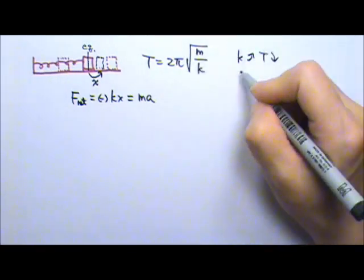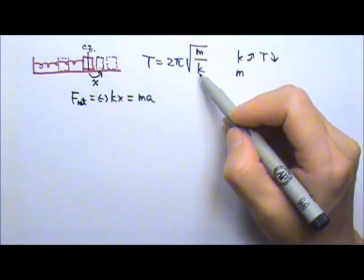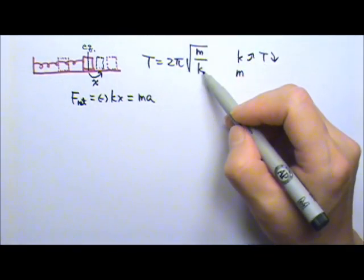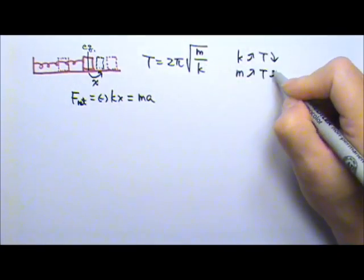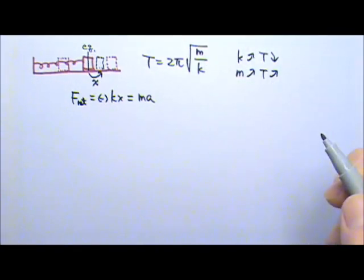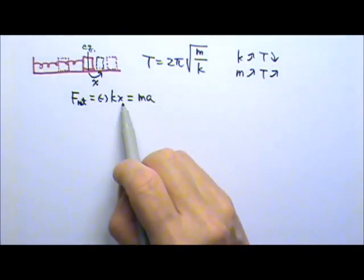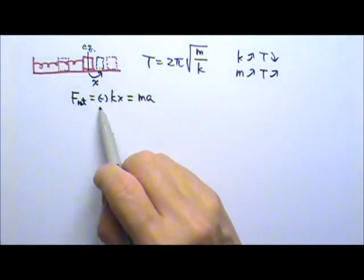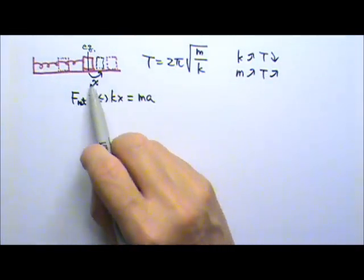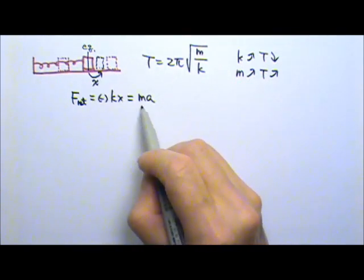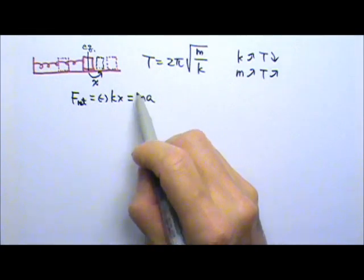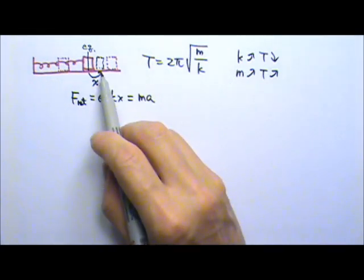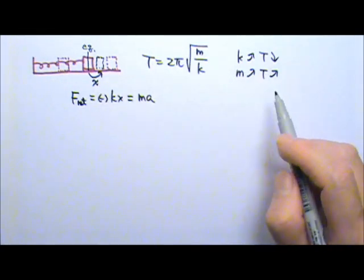We can also look at the mass. For the same spring constant, the larger the mass, the longer the period. If the spring constant is the same, the net force at this position is the same, but the heavier the box, the smaller the acceleration. That means the box doesn't get to move as fast, so the period is longer.